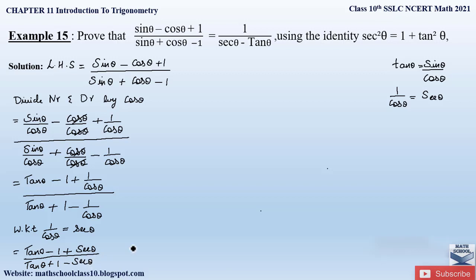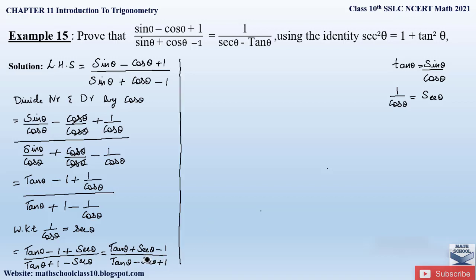Rearranging the terms, write it as (tan θ + sec θ − 1) divided by (tan θ − sec θ + 1). Now the very important step: since we have to bring sec θ − tan θ on the right-hand side, we multiply both the numerator and denominator by (tan θ − sec θ).